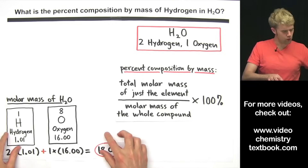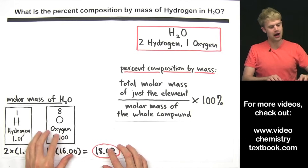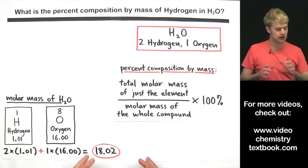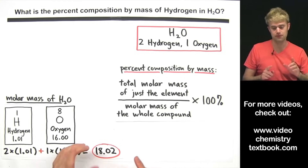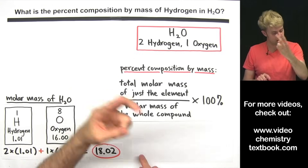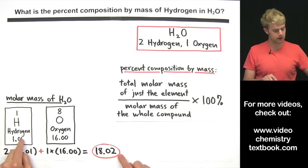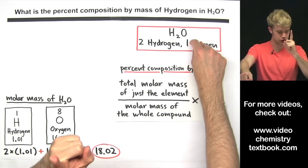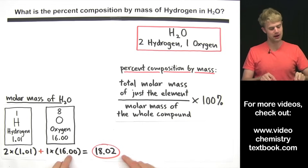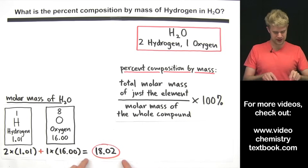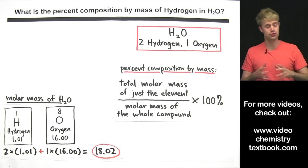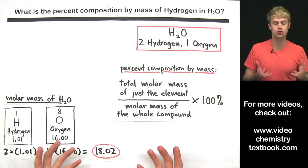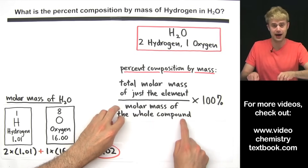We look up hydrogen and oxygen on the periodic table. Hydrogen has a molar mass of 1.01, and we have two of them, so we do 2 × 1.01. Then we add 1 × the molar mass of oxygen. Doing the addition gives us 18.02 — the molar mass of H₂O. That's the bottom of our fraction.